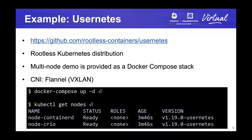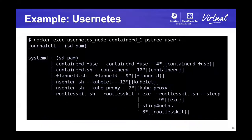Next is usernetes, our Kubernetes distribution that doesn't require root. We provide a demo of the cluster as a Docker Compose stack, so you can easily try it. For CRI runtimes, we support both containerd and CRI-O, and these runtimes can be mixed together in a single cluster. And you can see that all processes, including containerd, flannel, and kubelet, are running as a non-root user.